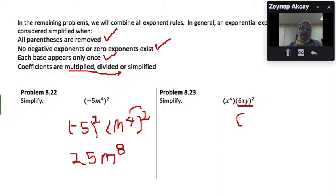It's going to be 6 squared, which is in fact 36. Let me write it as 36. And x will be squared, which will give us x squared. And y will be squared, so it's going to be y squared. So each factor inside the parentheses will be squared.